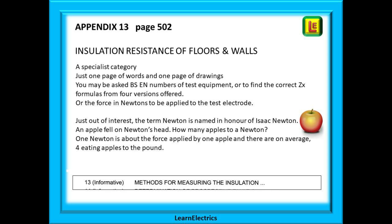Measuring the insulation resistance of floors and walls is the subject of appendix 13. In some regs books the full title has been chopped off — all it says is '13 methods for measuring the insulation.' If I were you I would add 'resistance impedance of floors and walls' to your book on page 3. It is a specialist subject with only one page of words and one page of drawings. Out of interest, some people ask what is the force of 750 newtons shown at the bottom of page 502. In a very unscientific way: one newton is about the same force as an eating apple in your hand at sea level, so 750 newtons is the same as 750 apples — about 85 kilograms of force, or the same as an average male standing on your hand.